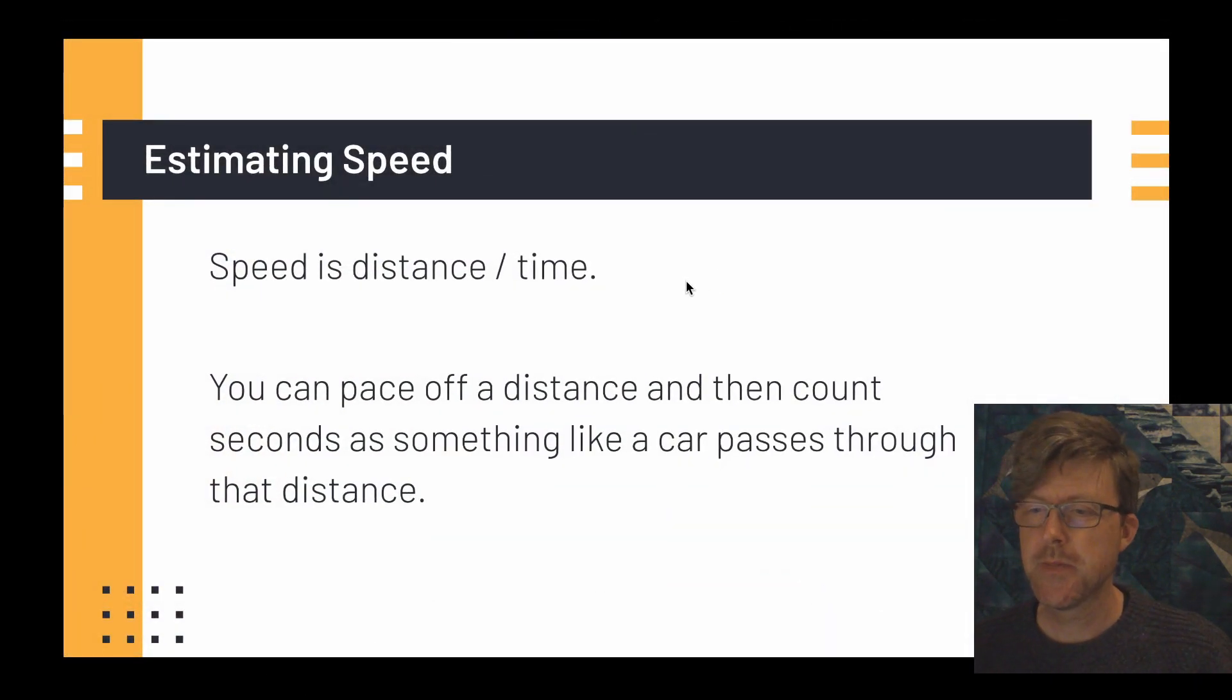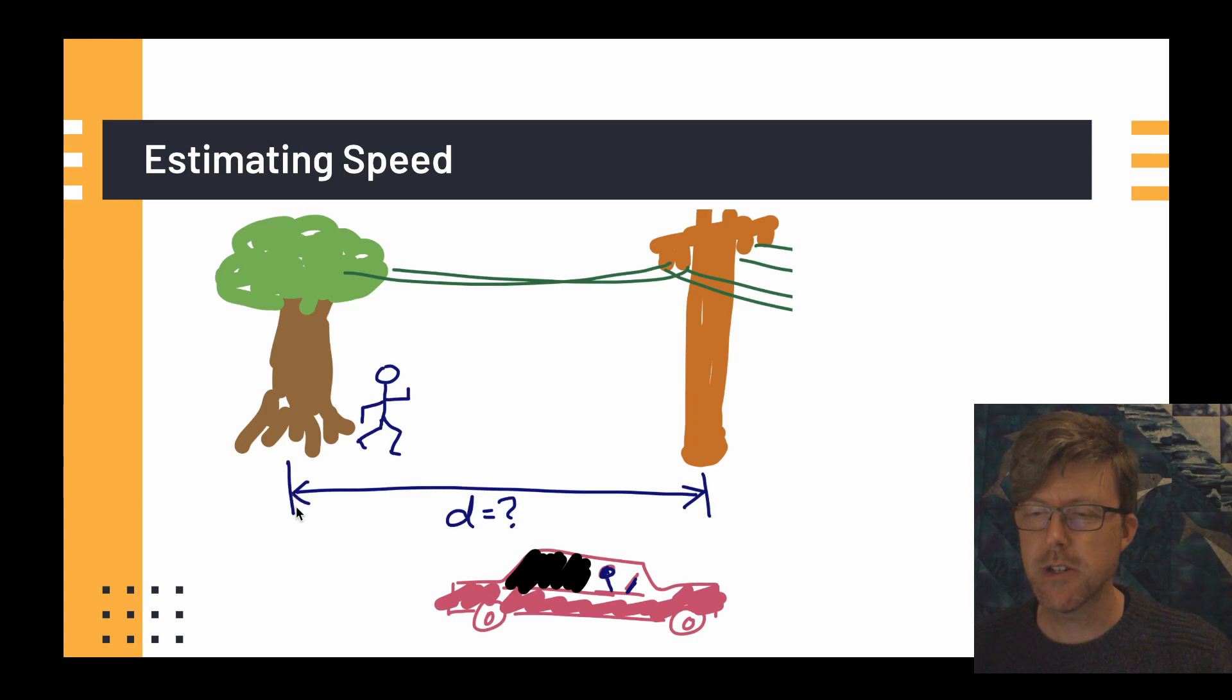All right, guys. Here's how you can estimate speed. So speed is distance divided by time. So you can pace off a distance, and then you can count seconds as something like a car passes through that distance. All right, so here's the example that we're going to do. We're going to actually pace off a distance, like the distance between this tree and that telephone pole. It looks like the tree is acting like a telephone pole here. That's funny. So we're going to pace off the distance here between the tree and the telephone pole. And then you can go watch as a car passes between this tree and this telephone pole. And you can count the seconds how long it takes the car to go by. 1,001, 1,002, 1,003. Okay, if it takes three seconds, and this is 24 meters, then you have to divide 24 meters by three seconds, and you get eight meters per second. We'll do a little bit more of those calculations after our experiment.